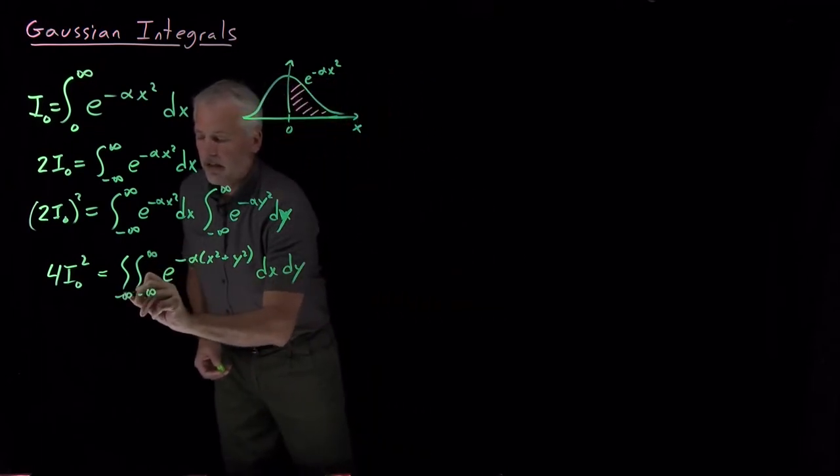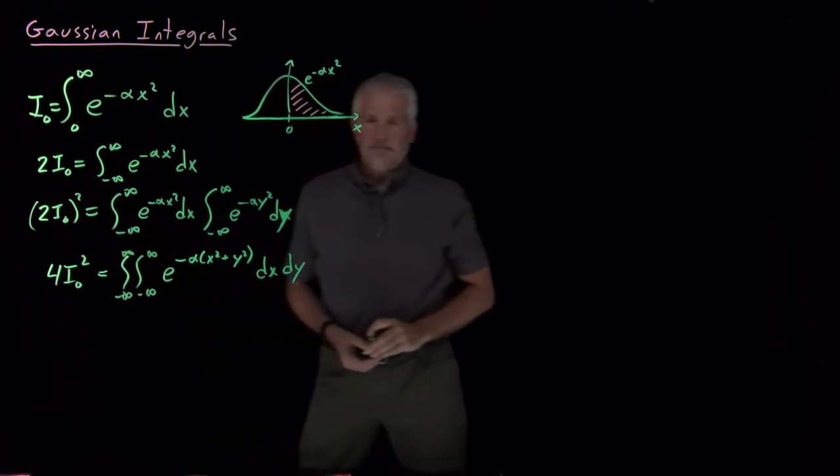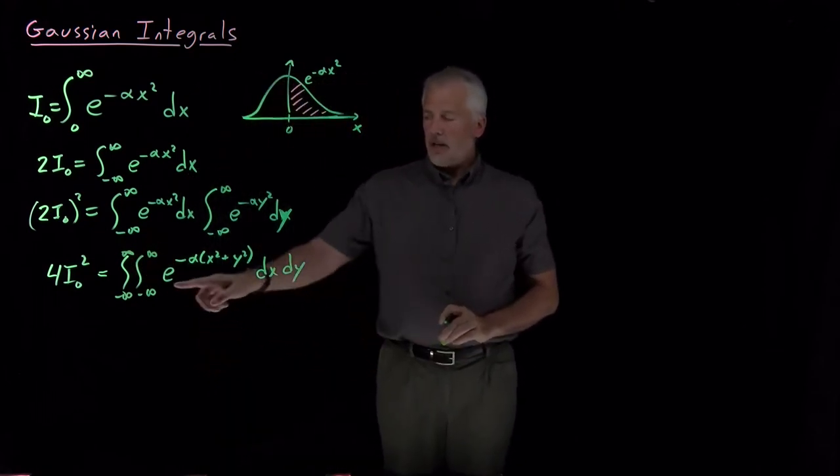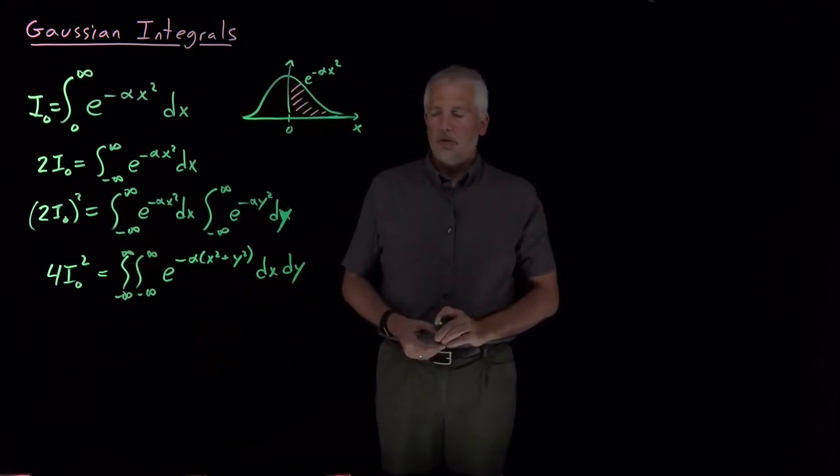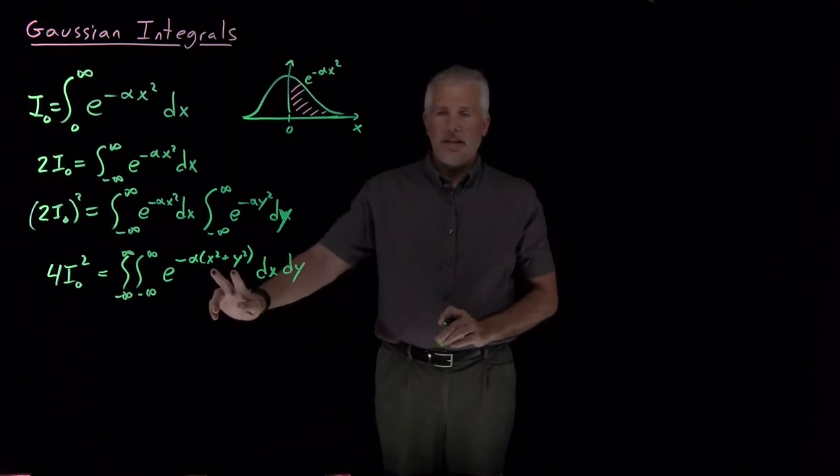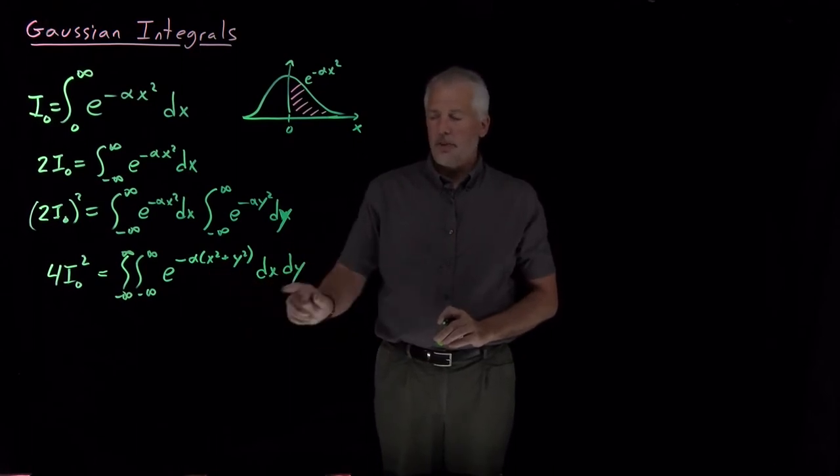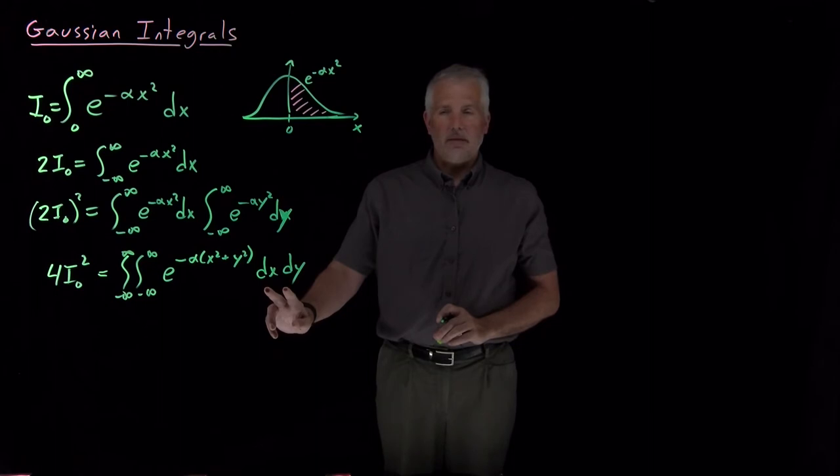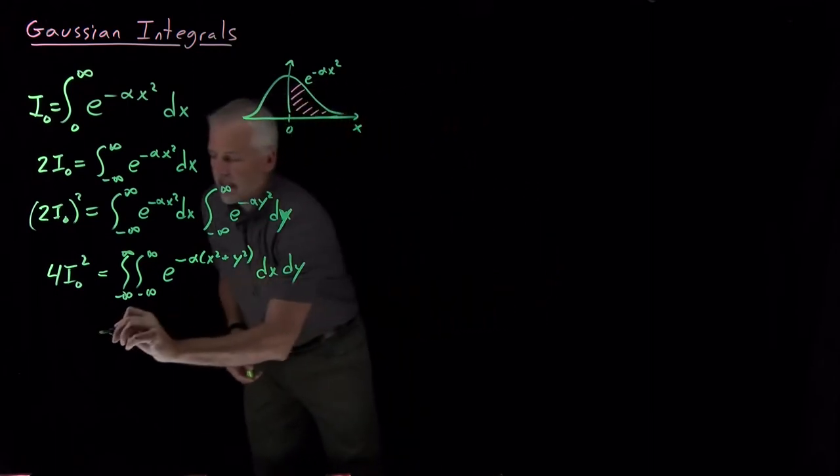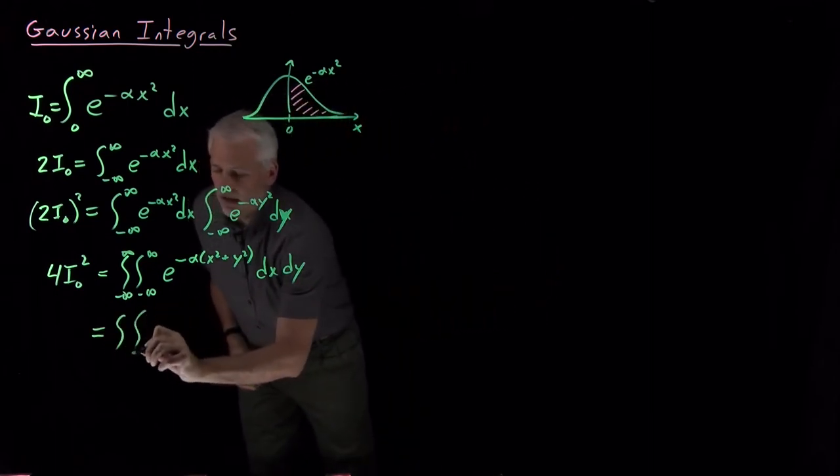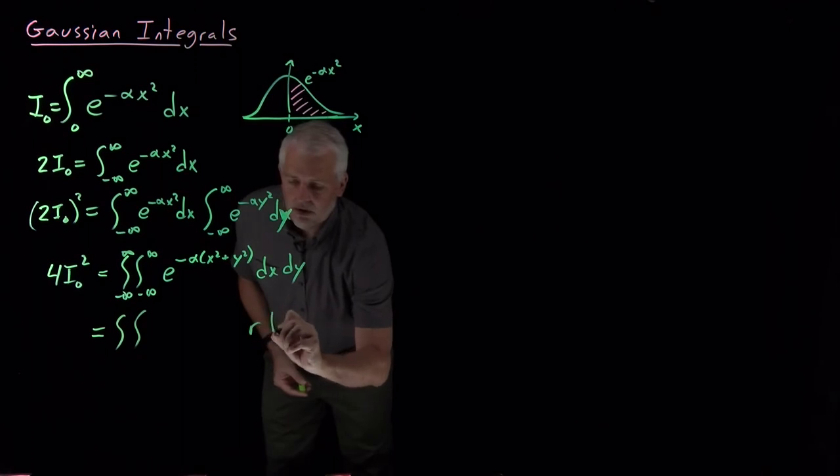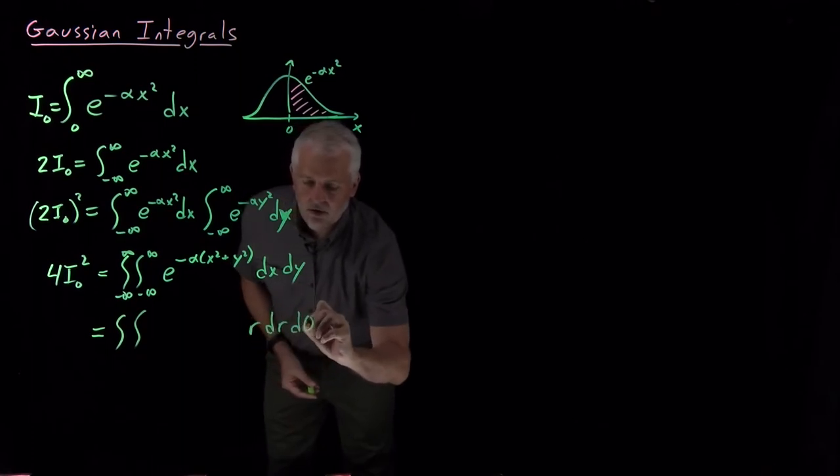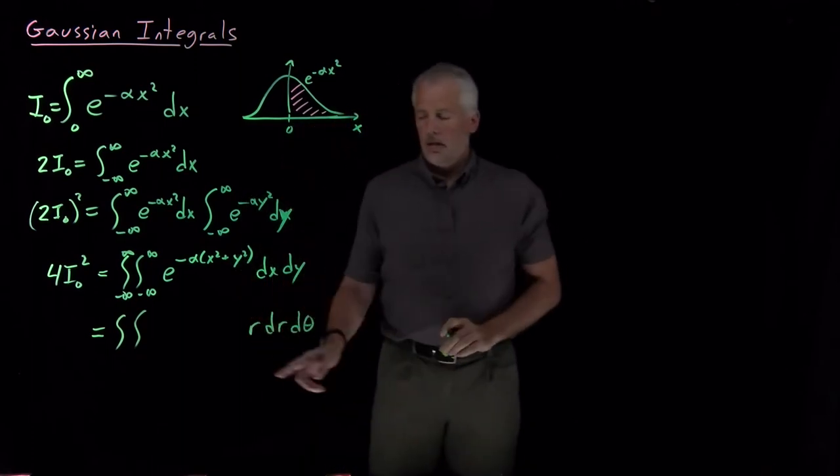But now that I've written it out as a two-dimensional integral, I realize, especially after seeing x squared plus y squared, I can think of that two-dimensional integral in Cartesian coordinates like I have it written here, or I can think of doing that same integral in polar coordinates.